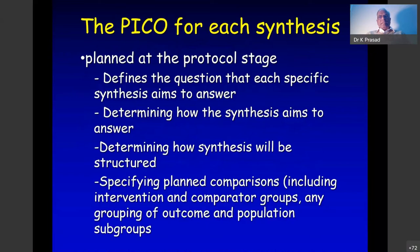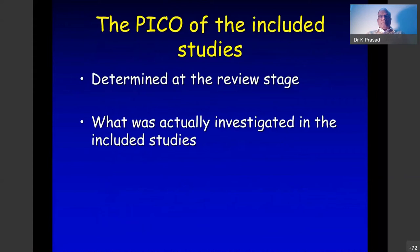Each forest plot you make represents a separate synthesis. A meta-analysis often has more than one forest plot — usually for different outcomes, sometimes for different comparisons. For each synthesis or forest plot there is a PICO; if there are five forest plots there are five PICOs. You have to plan this at the protocol stage, defining the question, structure of comparisons, outcomes, and whether you are going to do it in a patient subgroup.